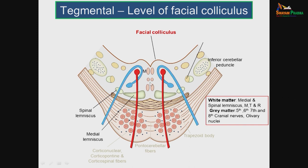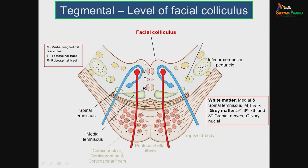In the median plane, there is the medial longitudinal fasciculus (MLF), the tectospinal tract and the rubrospinal tract. The MLF carries ascending and descending fibers of the vestibular nuclei. The tectospinal tract runs from the tectum of the superior colliculus to the spinal cord for visual coordination. The rubrospinal tract runs from the red nucleus to the spinal cord.